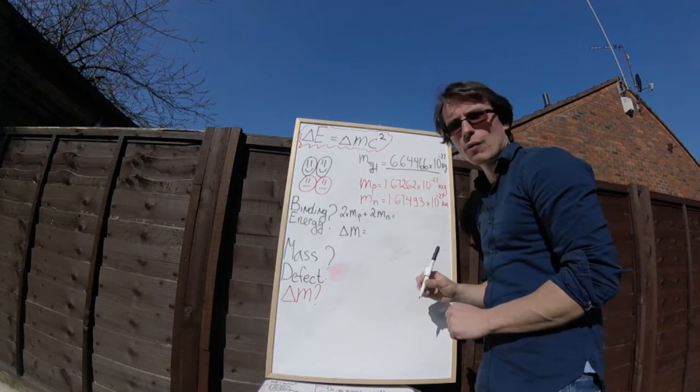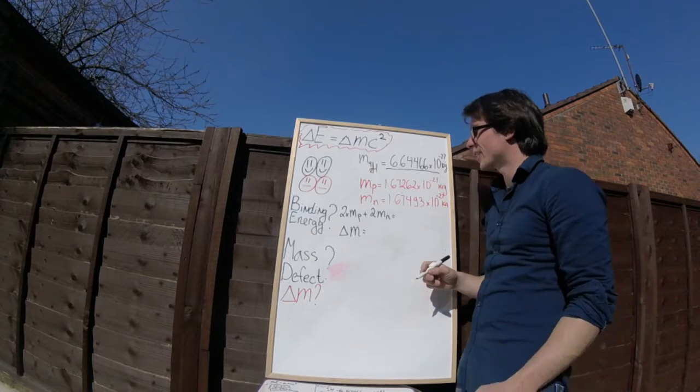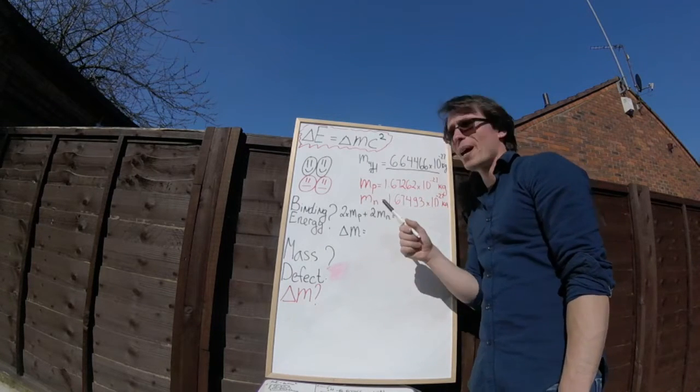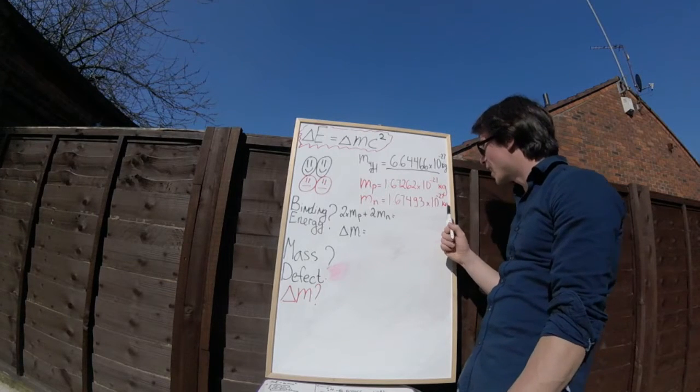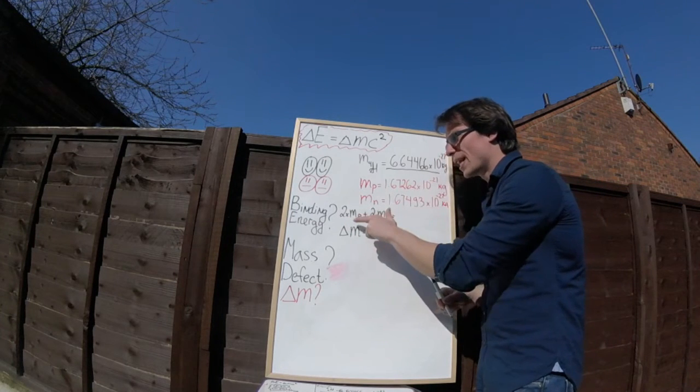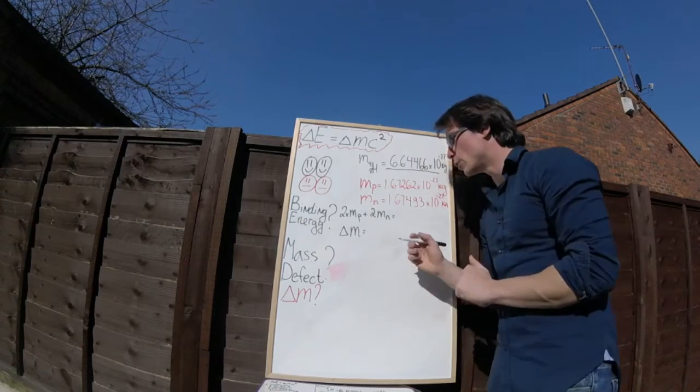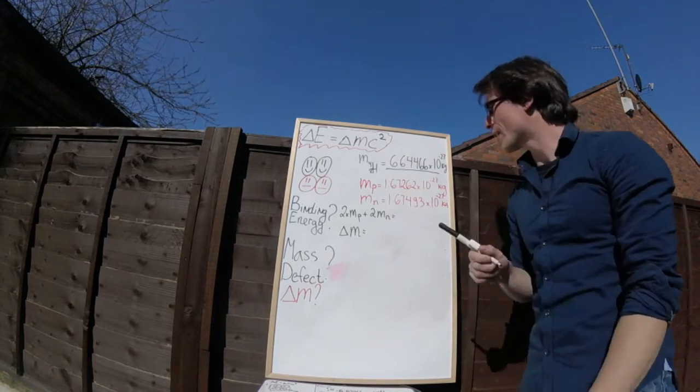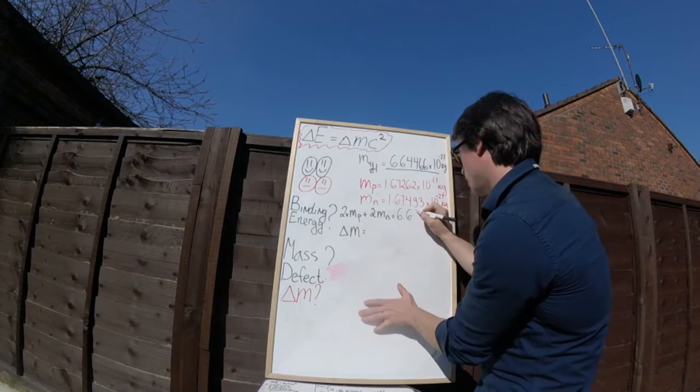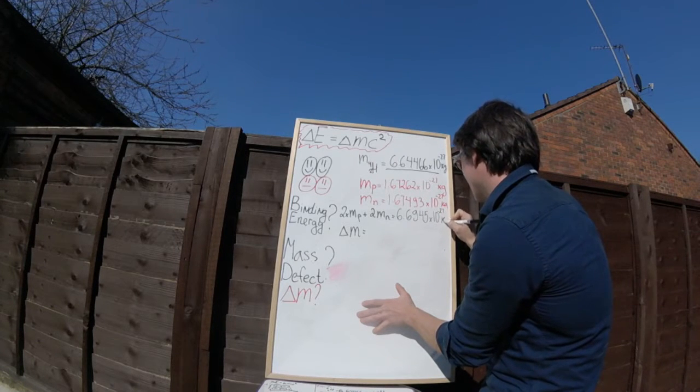We've got the mass of an alpha particle, 6.64466 times 10 to the power of minus 27 kg. We've got the mass of a proton, 1.67262 times 10 to the power of minus 27 kg, and the mass of a neutron, 1.67493 times 10 to the power of minus 27 kg. Shall we just add those two numbers, or twice the mass of a proton plus twice the mass of a neutron? If you input this into a calculator, so twice that, plus twice that, what we're going to get is 6.6945 multiplied by 10 to the power of minus 27 kg.